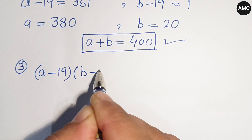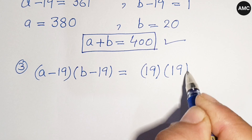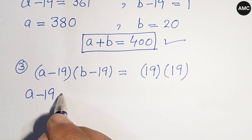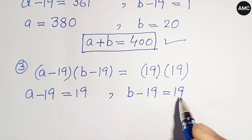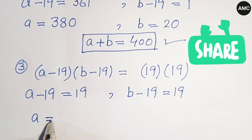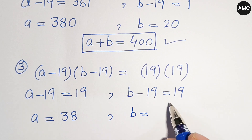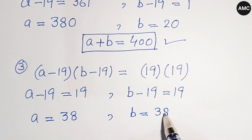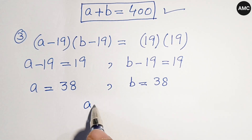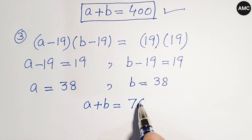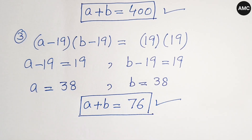From case 3, (a minus 19)(b minus 19) equals 19 times 19, so a minus 19 equals 19 and b minus 19 equals 19. Therefore a equals 38 and b equals 38, giving a plus b equals 76. This is our third value.